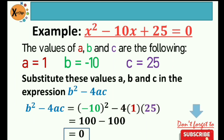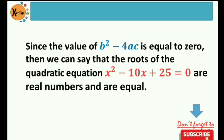So negative 10 squared, that's 100. Then the product of negative 4, 1, and 25, that's negative 100. So 100 minus 100 is 0. Therefore, since the value of our discriminant is equal to 0, we can say that the roots of the quadratic equation x squared minus 10x plus 25 equals 0 are real numbers and are equal.